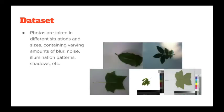Here are some sample pictures from the dataset. As you can see, they vary in quality a lot. Each picture contains varying amounts of blur, noise, illumination patterns, shadows, etc. Some pictures are of high quality and are taken from flattened leaves, while some are taken by mobile devices in outdoor environments.